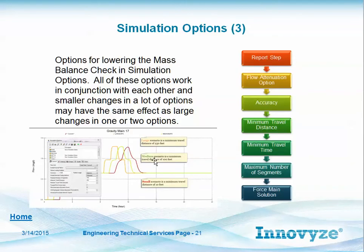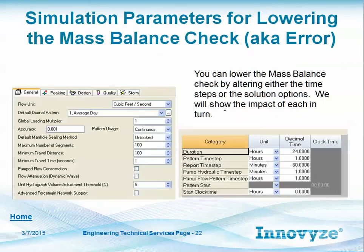There's an example on the Intervise blog showing the effect of adjusting the minimum travel distance — it attenuates the flow differently. Here are the various options for controlling continuity in InfoSewer.